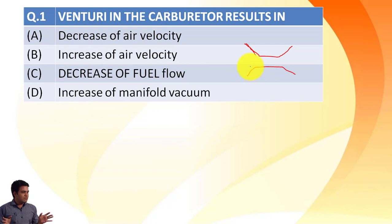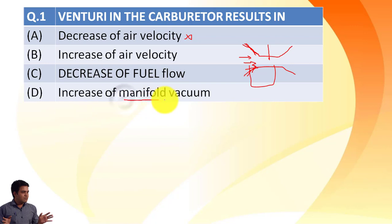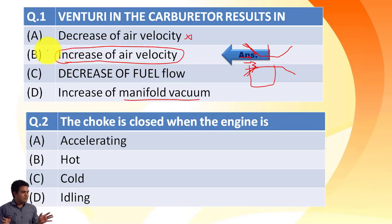The venturi works on Bernoulli's principle. Decrease of air velocity is the wrong option. Increase of air velocity is correct — due to the nozzle shape, the fluid (in our case, air) moving through the venturi sees pressure decreasing and velocity increasing as per Bernoulli's theorem. Decrease of fuel flow is not really relevant, and increase of manifold vacuum is completely irrelevant as manifold vacuum depends on engine speed. So the correct answer is the second option: increase of air velocity.